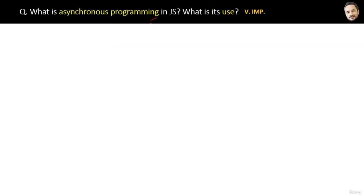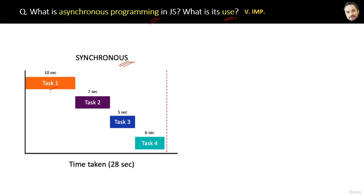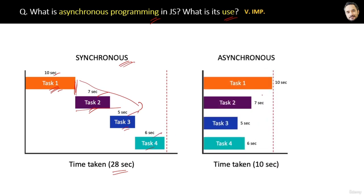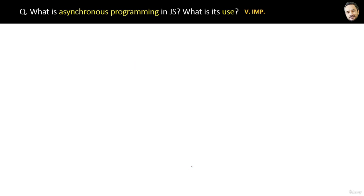What is asynchronous programming in JavaScript and what is its use? In synchronous programming, four tasks execute in sequence — task 2 only starts once task 1 is finished, so the total time is the sum of individual task times. But in asynchronous operations, functions can execute concurrently or in parallel — task 2 does not wait for task 1's completion, so the total time taken is less.